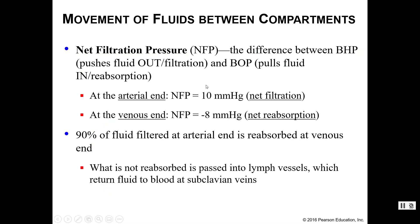Net filtration pressure is the difference between hydrostatic and osmotic pressures across the capillary. At the arterial end, net filtration is approximately 10 mmHg — so net filtration is occurring. At the venule end it drops to negative 8 mmHg, meaning net reabsorption is occurring. About 90% of fluid filtered at the arterial end is reabsorbed at the venous end. The remaining 10% enters the lymph vessels, which return that lymph fluid to the subclavian veins to reenter the bloodstream.